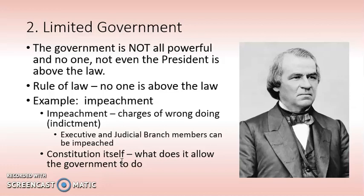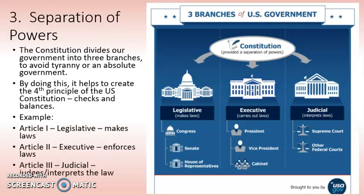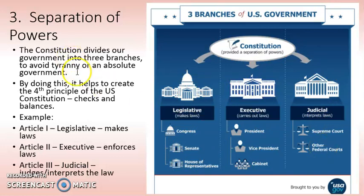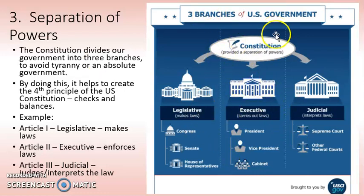The next principle is separation of powers — the three branches created by the Constitution. Article 1 creates the legislative branch, Article 2 is the executive branch, and Article 3 is the judicial branch. Our Constitution divides government into three branches to avoid tyranny or an absolute government. We don't want a King George III, we don't want one branch controlling everything or a dictator. Each branch stays in its own lane — like cars driving straight without merging.